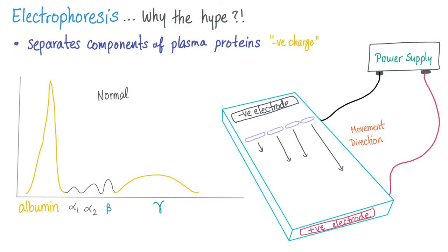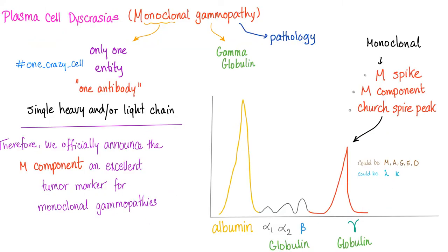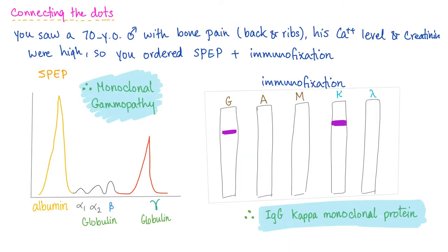Multiple myeloma has the M spike on the gamma globulin portion — also known as the M component on electrophoresis. However, we cannot tell which type of immunoglobulin is elevated from electrophoresis alone. We need immunoelectrophoresis with immunofixation. This is how you diagnose multiple myeloma: start with electrophoresis showing monoclonal gammopathy, then do immunofixation to identify, for example, IgG kappa monoclonal protein.